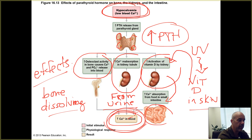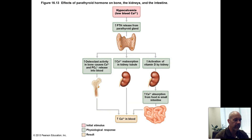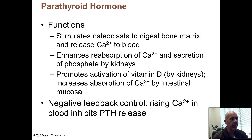Thinking about this as a negative feedback loop: calcium ion levels go up, PTH production shuts down, and that allows calcium ion levels to drop. When levels get low again, the parathyroid glands secrete PTH, all these effects occur, and calcium ion levels in the blood and other body fluids rise again. PTH is a very important, critical hormone for helping maintain calcium levels in our body fluids.